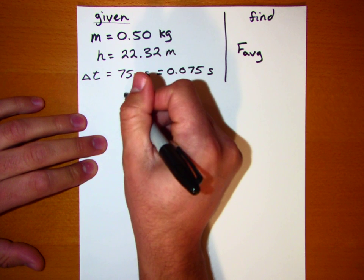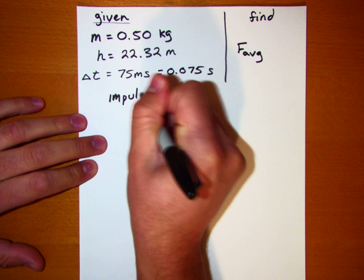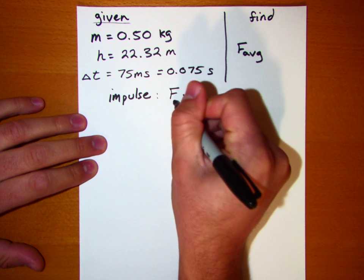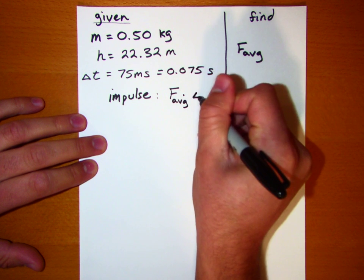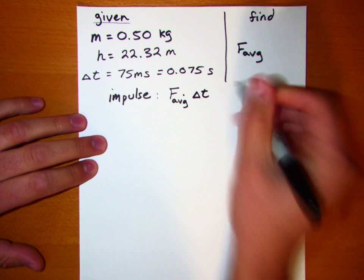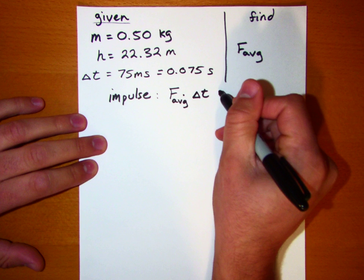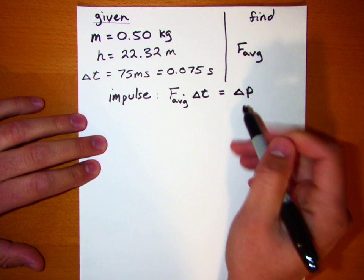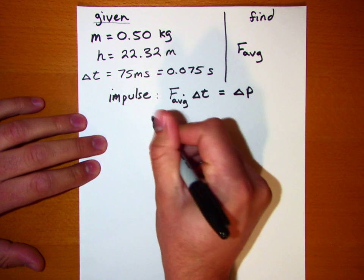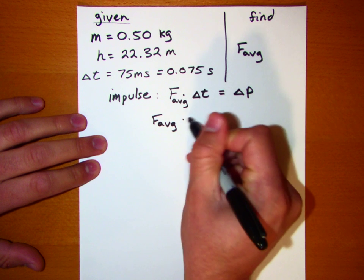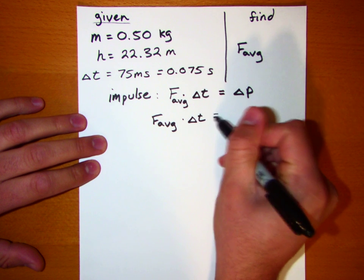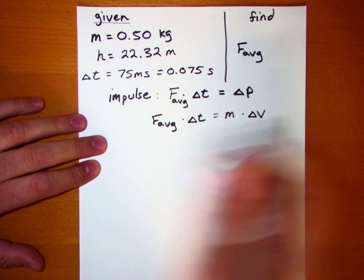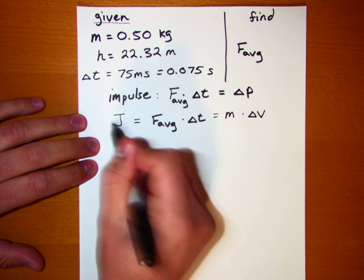If you remember what impulse is: impulse is just a force acting on an object — in this case, an average force acting on an object over a certain amount of time. We know that the impulse is equal to the change in momentum of the object. And since momentum is just m times v, we can rewrite this: the average force times the time over which that force is applied equals the change in momentum, which is m times delta v. This is the impulse, which we might call J.